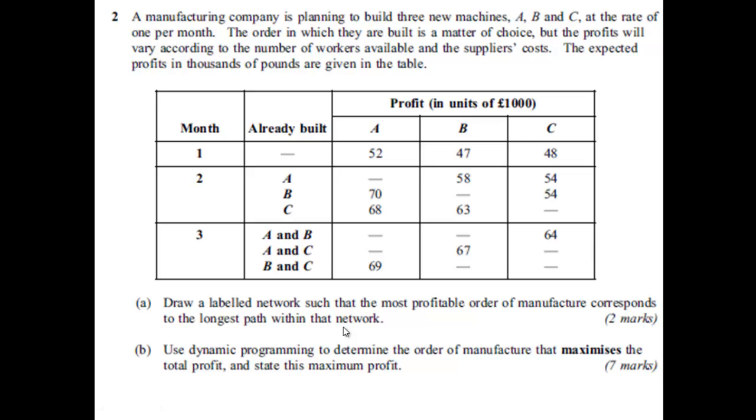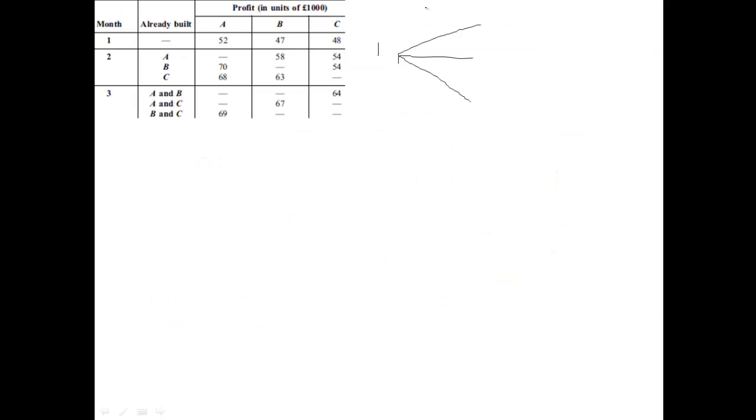The first two marks: draw a labelled network such that the most profitable order of manufacture corresponds to the longest path within that network. That's really drawing a network to set the problem up. Part B is where most of the marks are carried - use dynamic programming. In the first month, we either build machine A with a profit of £52,000, machine B with £47,000, or machine C with £48,000.